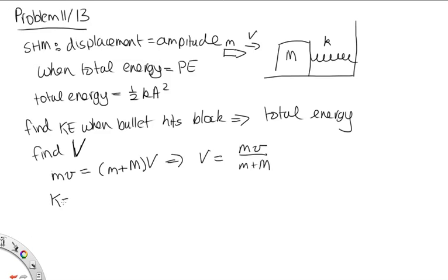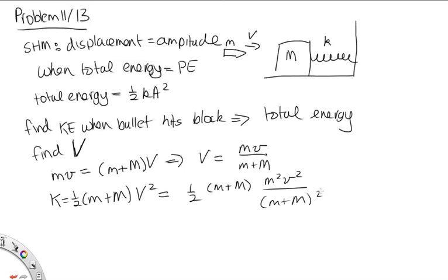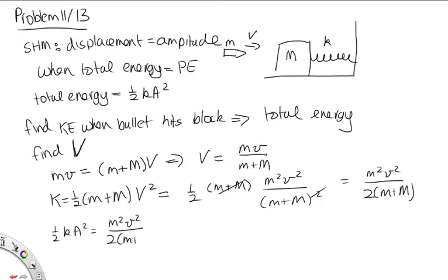The kinetic energy equals one-half times the combined mass (m + M) times V squared, which is one-half (m + M) times m²v² / (m + M)². One factor of (m + M) cancels, giving KE = m²v² / [2(m + M)]. This kinetic energy equals the total energy, and when that total energy is transferred into the spring, that's when we find the amplitude. So one-half k A² = m²v² / [2(m + M)].